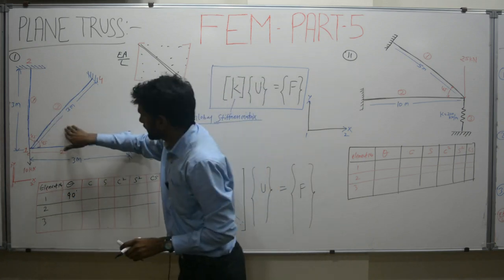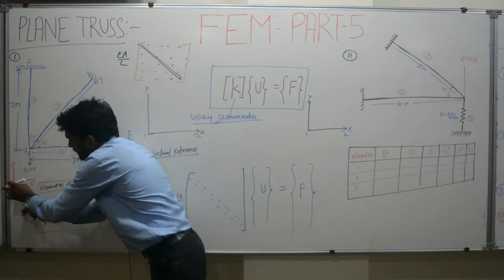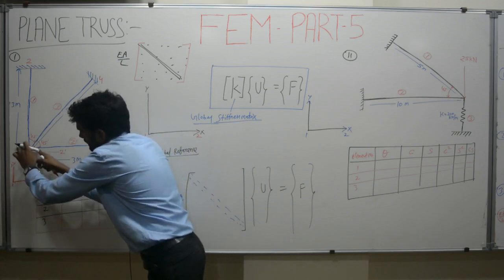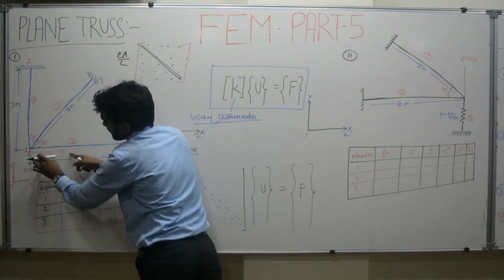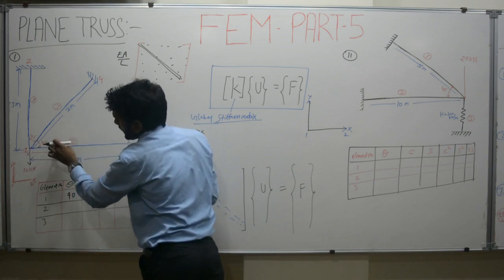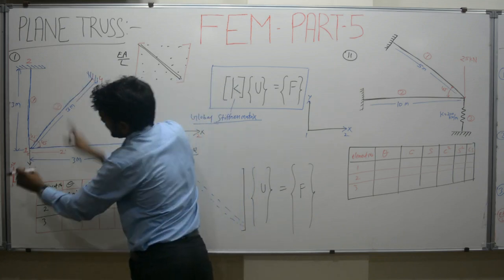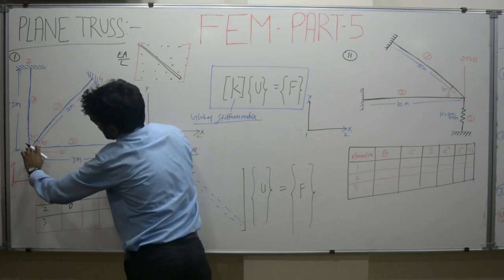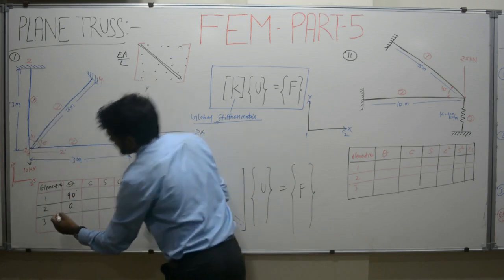Coming back to element 2, I again export the reference 1 dash, 2 dash to its initial node. Here, the element and the x-axis are parallel, so the angle is 0 degrees. Then for element 3, I export the reference axis to its starting node and measure the angle from the axis to the element, which is already given as 45 degrees.